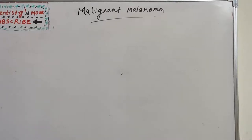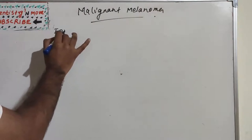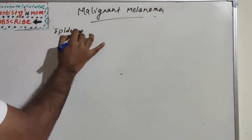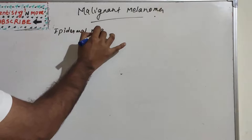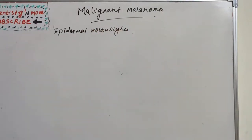Welcome back to another session in Dentistry and More. Today we have a malignant condition known as malignant melanoma, which is a neoplasm of epidermal melanocytes. It is one of the most biologically unpredictable and deadly of all human neoplasms.